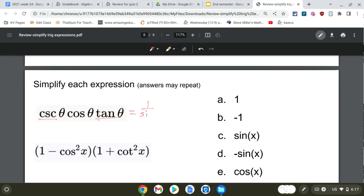I'm going to get 1 over sine for the cosecant. I'm going to get a cosine, and then I'm going to get a sine over cosine.